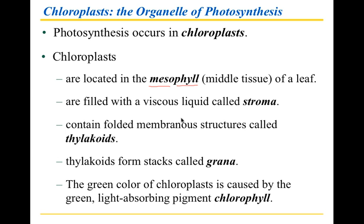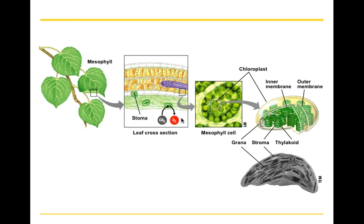One key component is light-absorbing pigments. The most important one of these is chlorophyll, and chlorophyll is the molecule that is able to take up the light energy and convert it into chemical energy. And that's the process we're going to investigate.